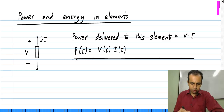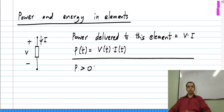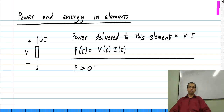Now, if this P is more than 0 — remember V and I can have any values, we are not discussing any particular element here — the product P can be either more than 0 or less than 0. If P is more than 0, that means the element is absorbing power at that instant. And if P is less than 0, the element is delivering power — negative power is being delivered to the element, which means the element is actually generating or delivering power to the rest of the circuit.